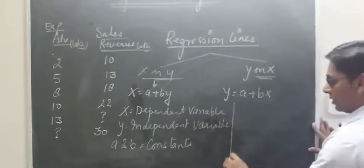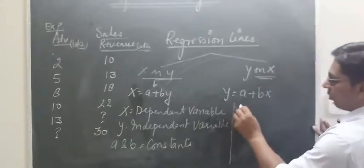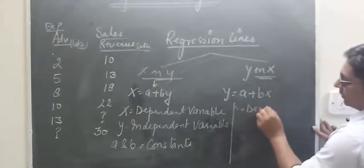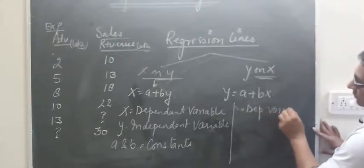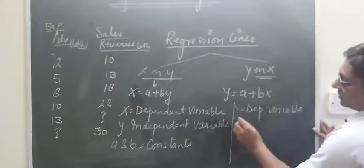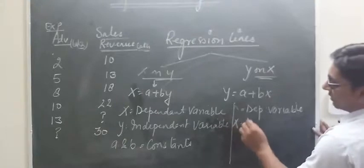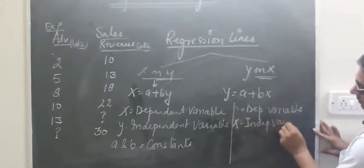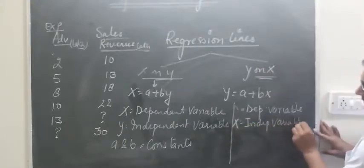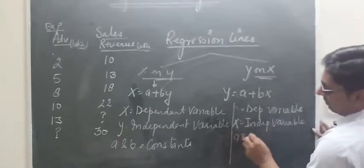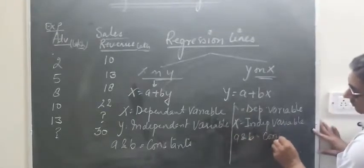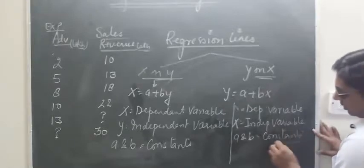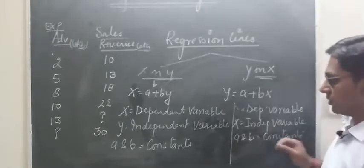Similarly, in the y on x equation, y is the dependent variable whereas x is the independent variable. A and b are constants whose values remain constant and do not change.